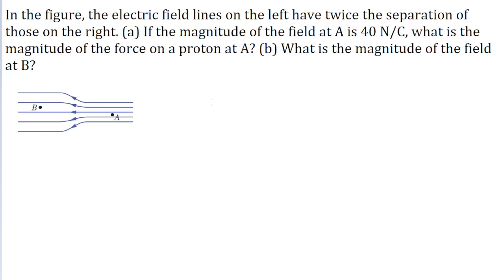In this problem, we have a diagram of an electric field line setup with two points labeled A and B. Part A of the problem tells us that there is a proton at point A and that the electric field at the point where point A is located has a magnitude of 40 newtons per coulomb. We're asked to find the magnitude of the force on the proton at point A.